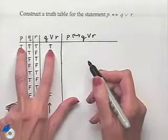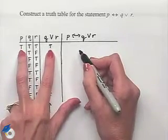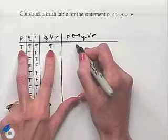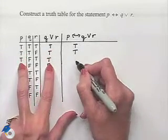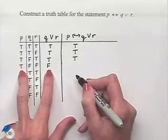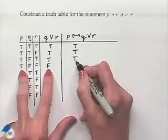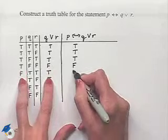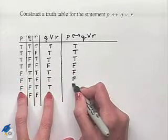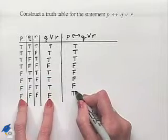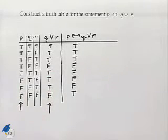Now the biconditional is true as long as both parts have the same truth value, as occurs in our first row, and our second, and our third, but notice in the fourth row they have different truth values. This will be a false statement. False, false, false, and then true. And here's our truth table for this statement.